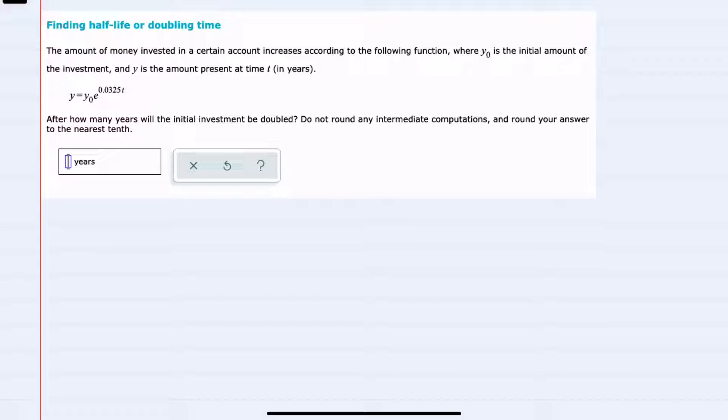The example here, we're given the equation y equals y₀e to the 0.0325t, where y is the amount in the present time, y₀ is the initial amount, and t is time.